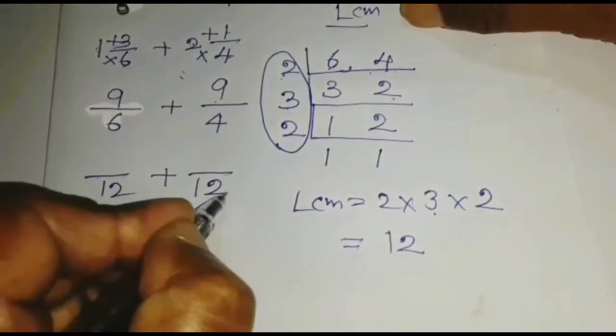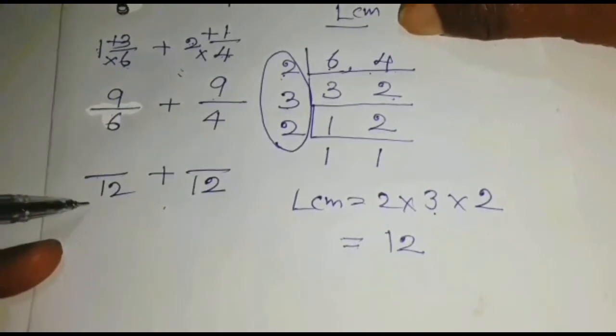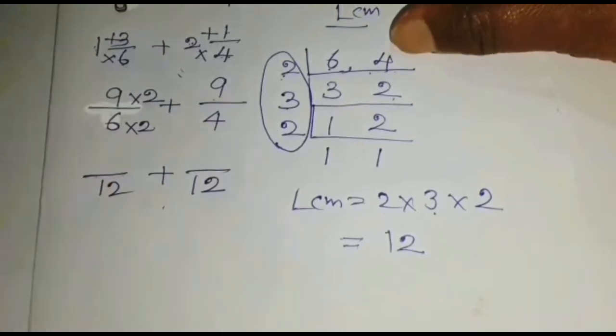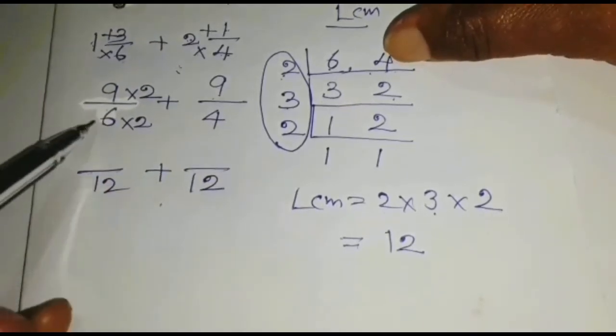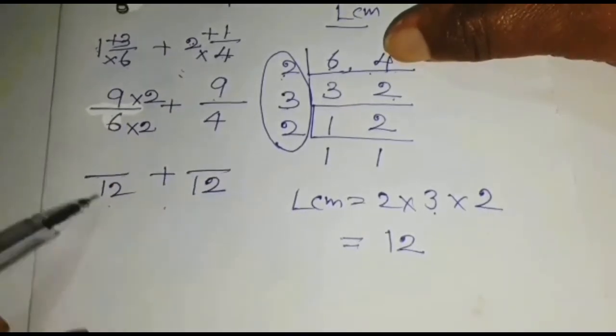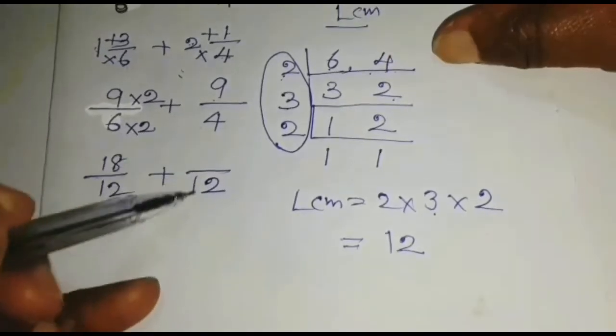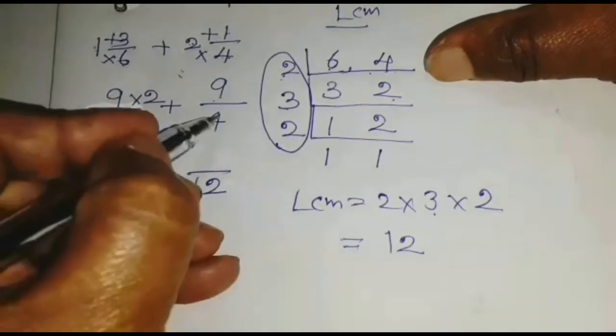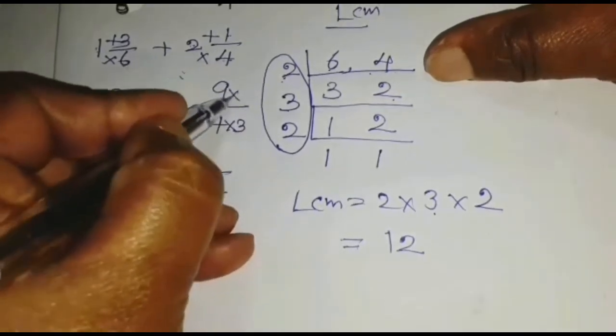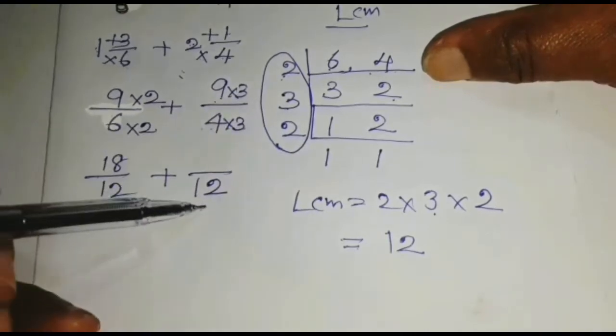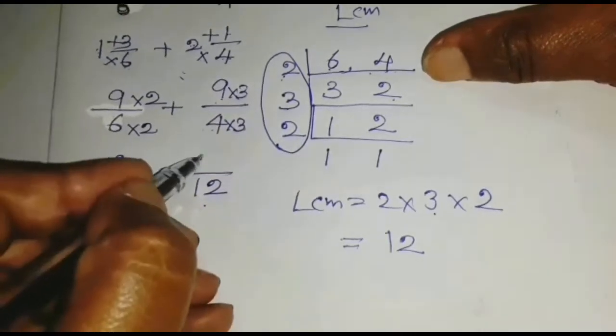Then, 6 converted into 12, multiplied by 2 and multiplied by 2, both numerator and denominator. 6 into 2 is 12. 9 into 2 is 18. 4 converted into 12, then multiplied by 3, multiplied by 3, both numerator and denominator. 4 into 3 is 12. 9 into 3 is 27.